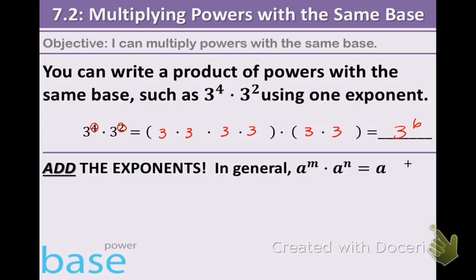So we are going to write a product of powers with the same base, such as 3 to the 4th times 3 to the 2nd using one exponent. So you can see right here we have a 4 in the exponent, we have a 2 in the exponent. Remember the exponent just tells you how many times you're multiplying that number.